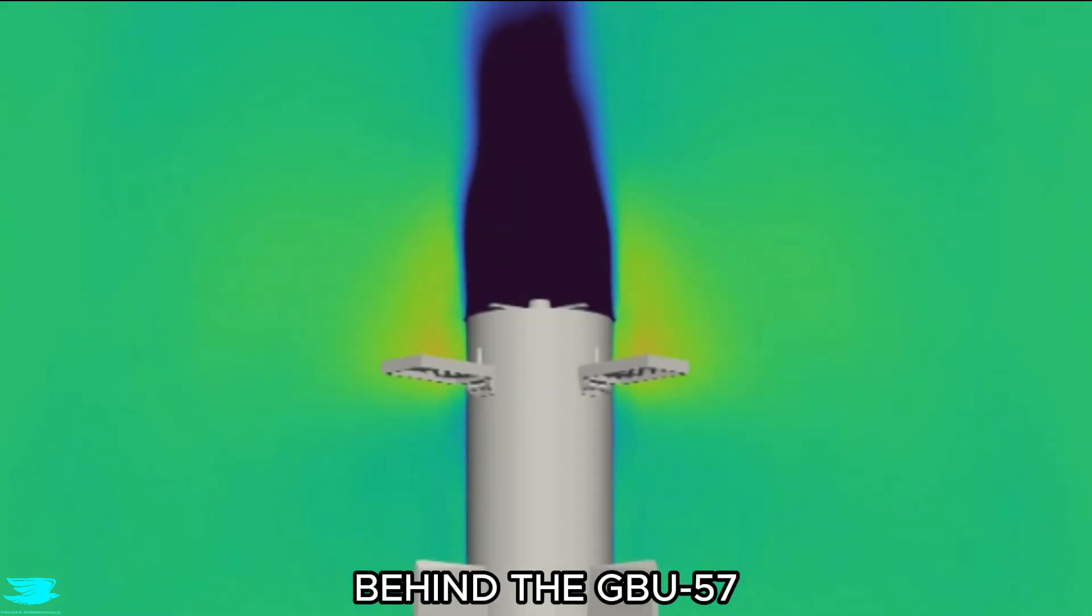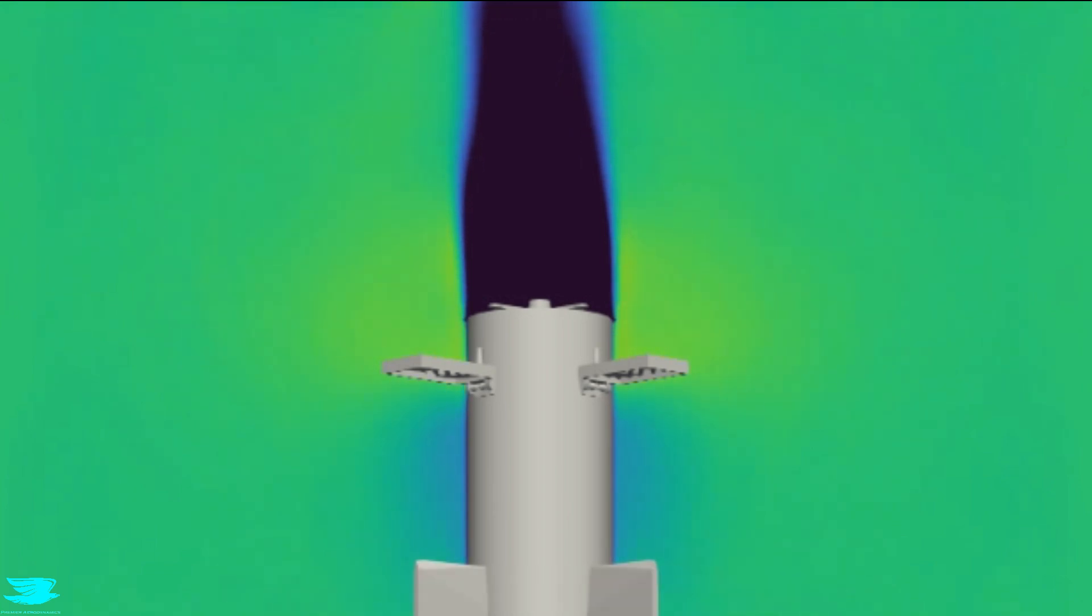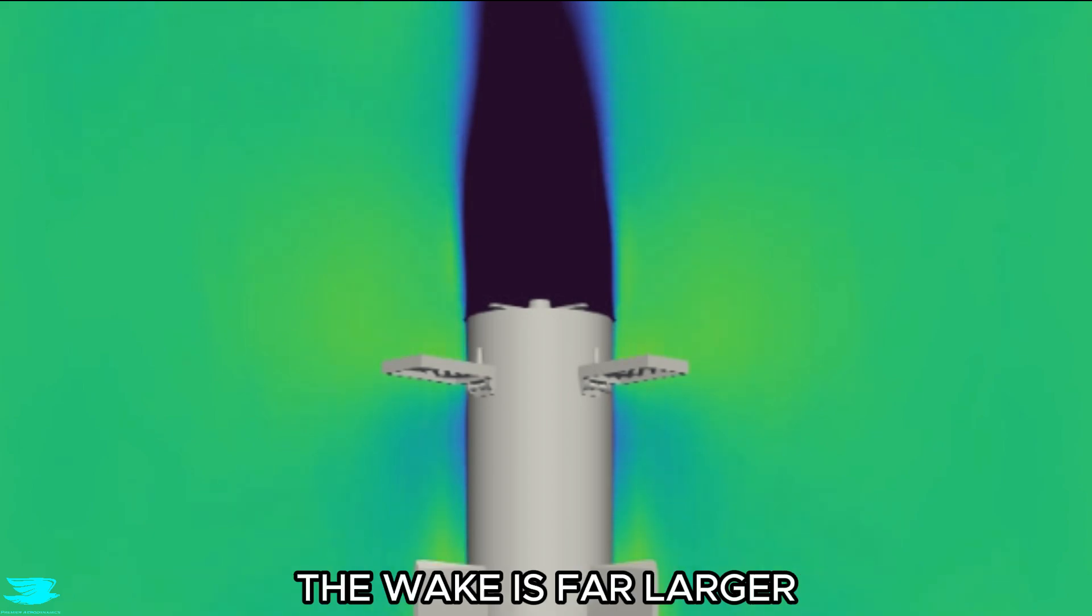Behind the GBU-57, a relatively small wake forms, but that's in this plane that cuts between the plates. For a plane that cuts through them, the wake is far larger.